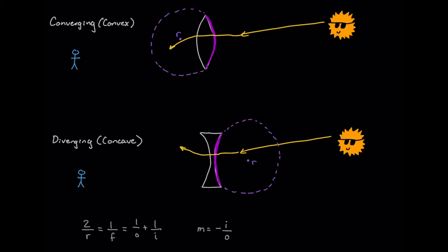And for diverging lenses, radius by definition will be negative, and radius by definition with converging lenses will be positive.